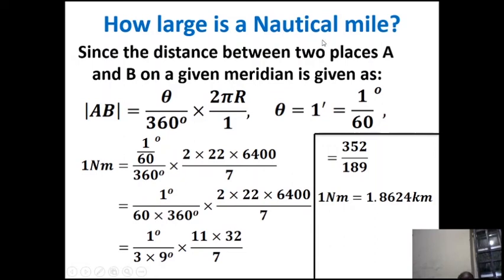How large is a nautical mile? Since the distance between two places A and B on a given meridian is given as AB = (theta / 360°) × 2πr, the angle — which is the latitude — is one minute, defined as 1/60 degrees. To check the magnitude of a nautical mile converted to kilometers, the angle theta is (1/60°) / 360° × 2πr. There is no cosine of latitude here because along the meridian, everything is on a great circle. Upon evaluation, one nautical mile is approximately equal to 1.8624 kilometers.